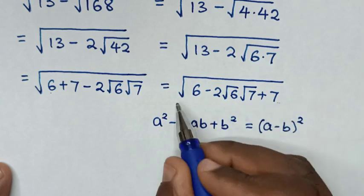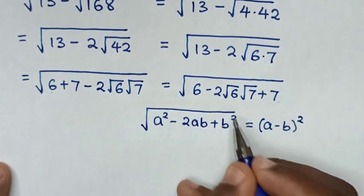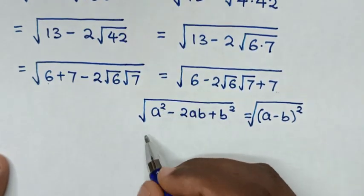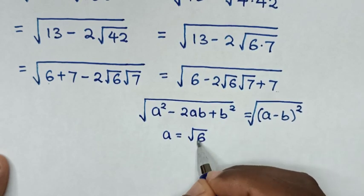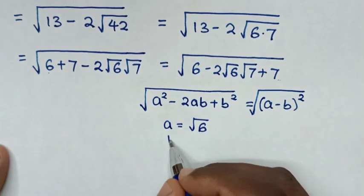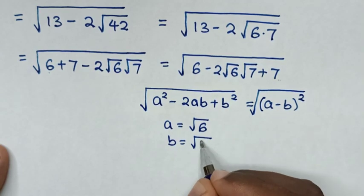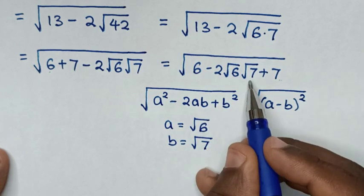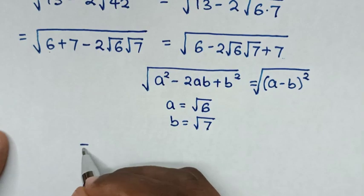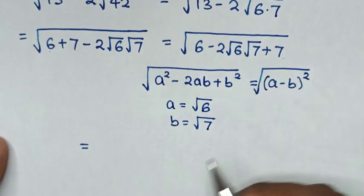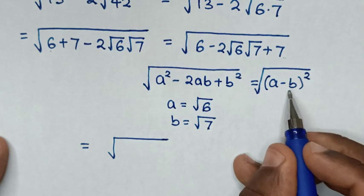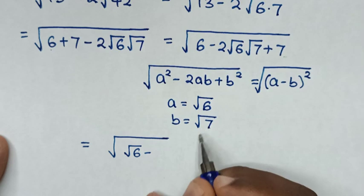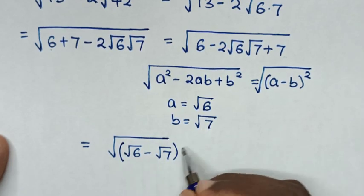But this expression is under a square root, so we apply the square root to the formula. When you compare a² with 6, then a is equal to square root of 6. And when you compare b² with 7, then b is equal to square root of 7. So negative 2ab is negative 2 times square root of 6 times square root of 7. Then it will be equal to square root of (a minus b) squared, where a is square root of 6 and b is square root of 7.